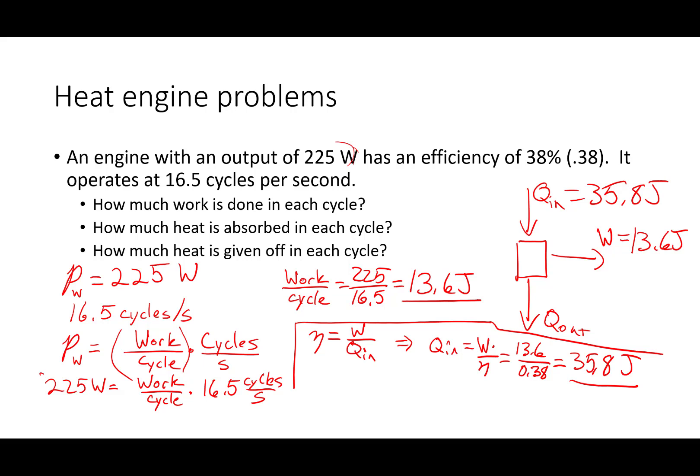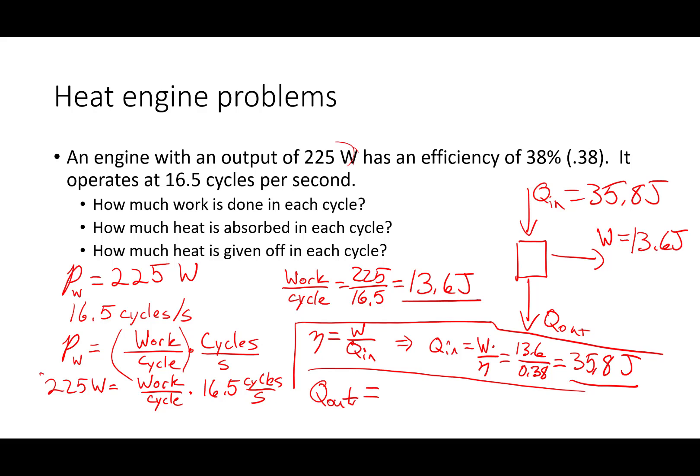If we want to find our output power, then all we have to do is subtract off our input minus our work, because the total energy in has to equal the total energy out. So Qout is equal to Qin 35.8 minus 13.6, which is equal to 22.2 joules. That's that. We solved a three-parter problem. Hopefully that was helpful. This should also be really useful for the quest. Bye.